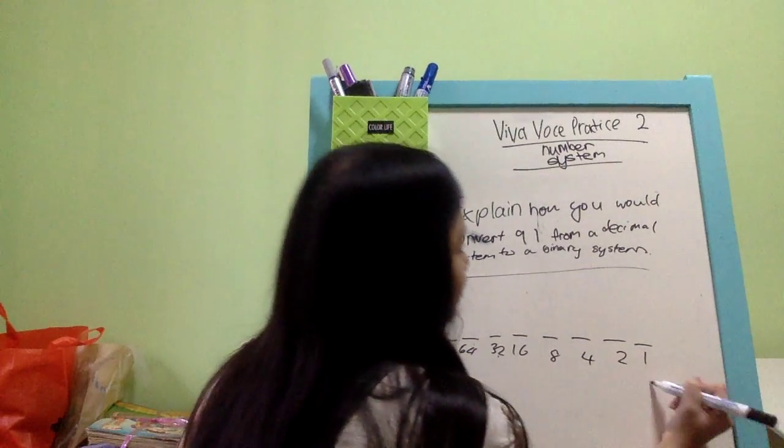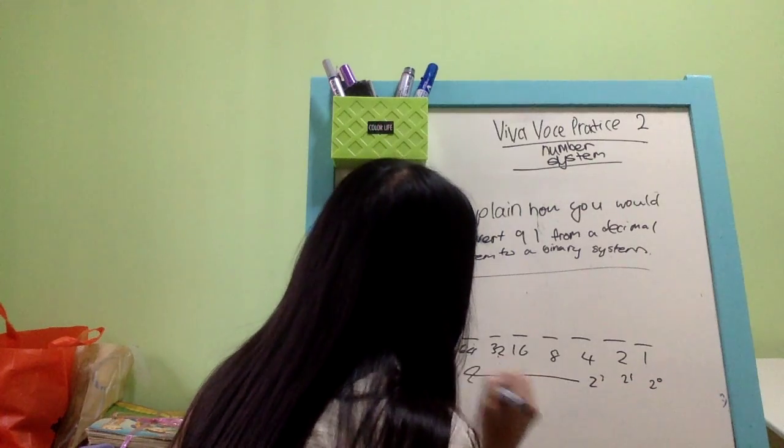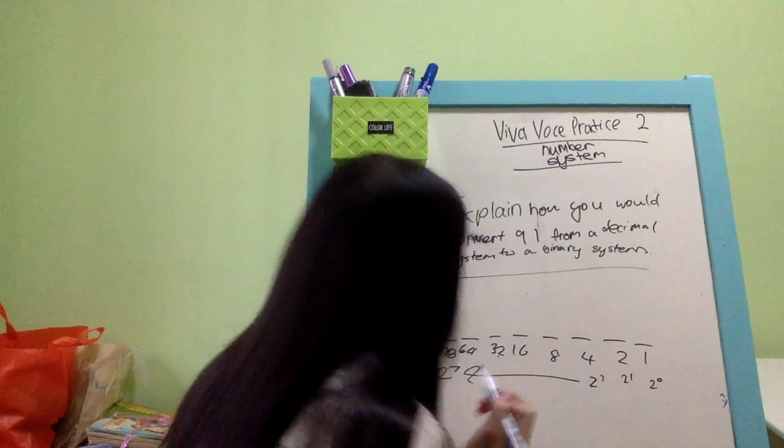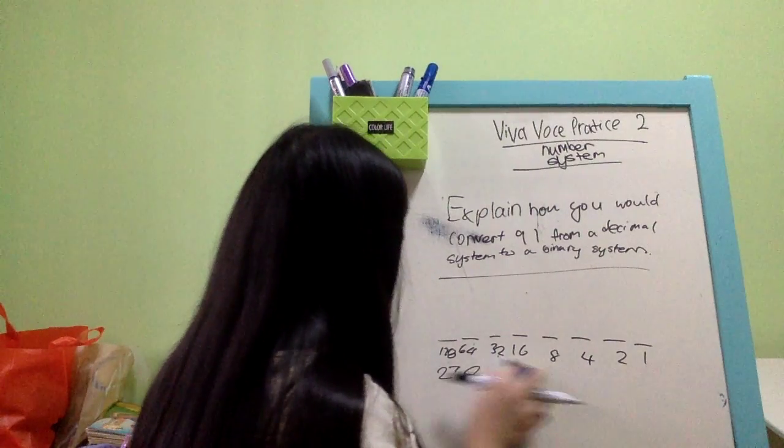Everybody knows that so this will be 2 to the power 0, 2 to the power 1, 2 to the power 2, 2 to the power 3, so on and so forth, and then 1 to 8 is 2 to the power 7. Alright, so you don't really have to write this.